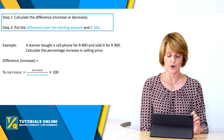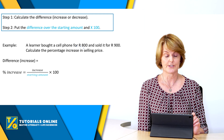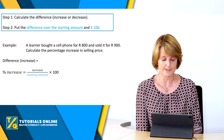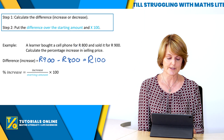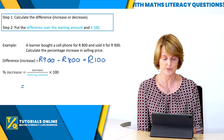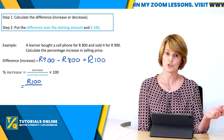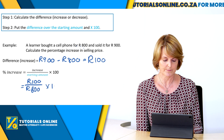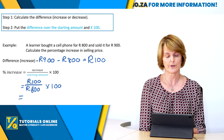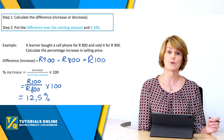Here's an example: a learner bought a cell phone for 800 rand and sold it for 900 rand — calculate the percentage increase. First, the difference: 900 minus 800 equals 100 rand. Substituting into the formula: percentage increase equals 100 over 800 times 100. Entering that into your calculator gives an answer of 12,5%.